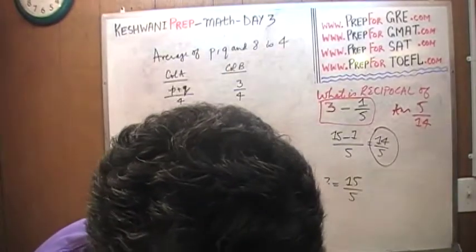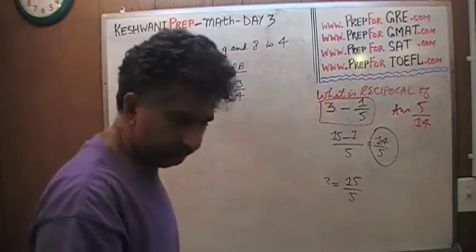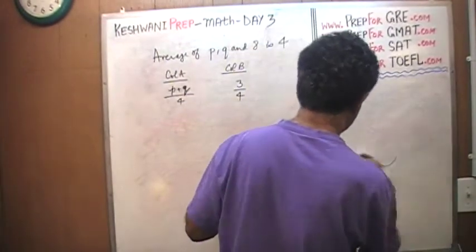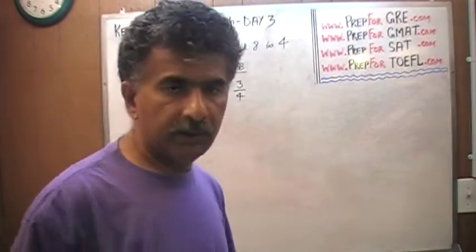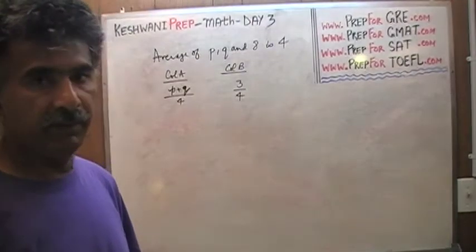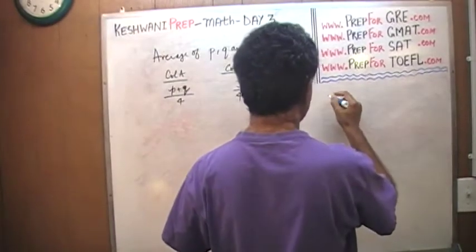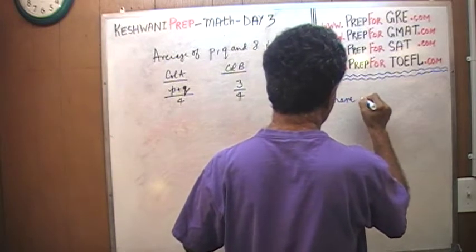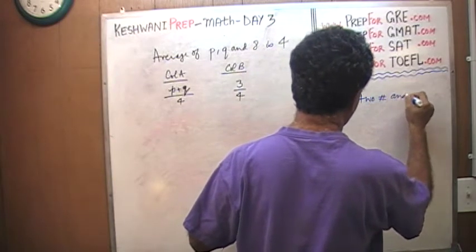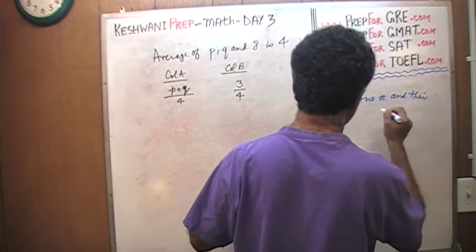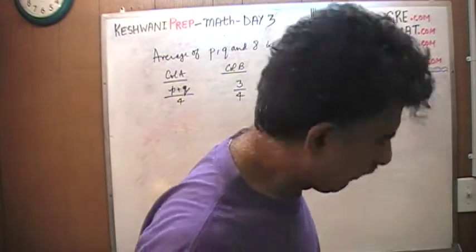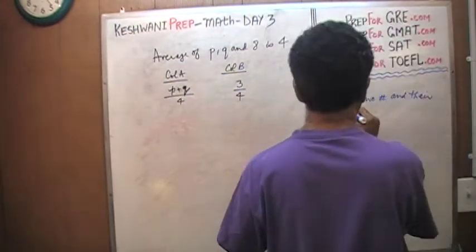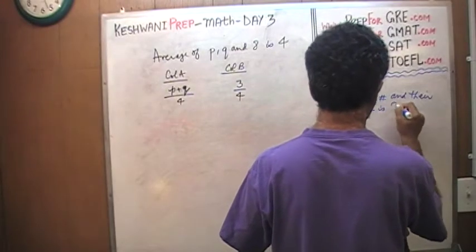Before we start this particular problem, let's talk about something simpler. If I tell you that I have two numbers and their average is 10. Let's make it simpler... I have two numbers and their average is 2.